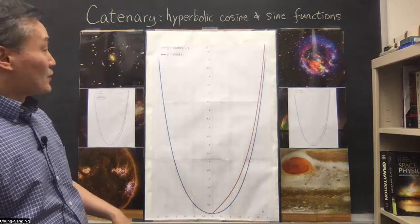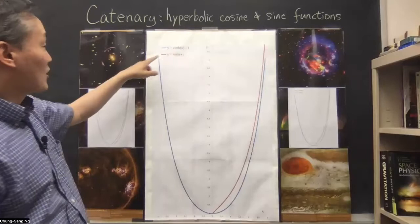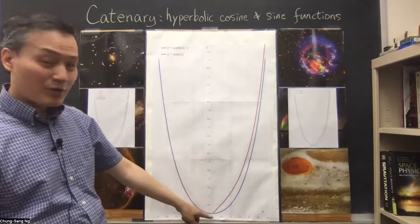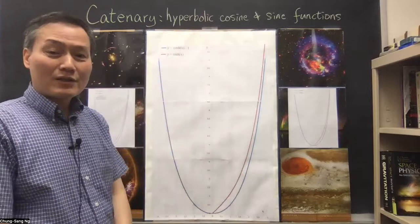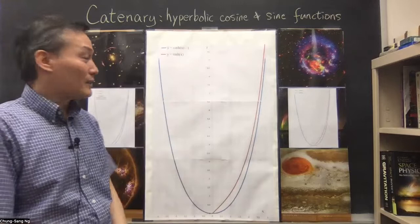So basically, the blue curve is the cosh function — actually cosh minus one — because I want the curve to be at zero when x is zero. The cosh function when x is zero equals one, so I need to subtract one, basically move the curve down by one. And the red curve is the sinh function.